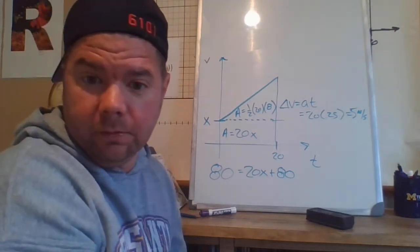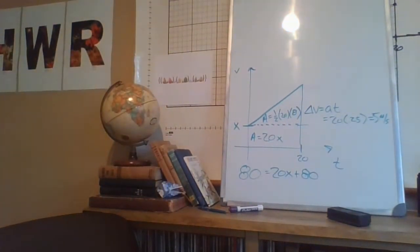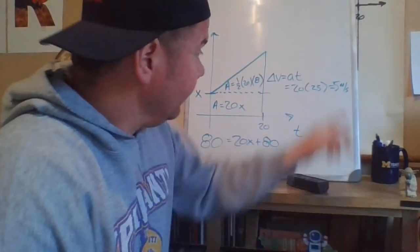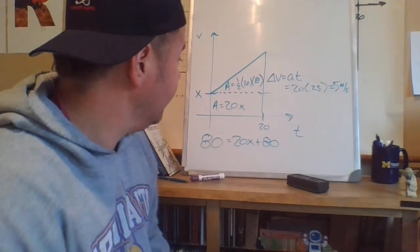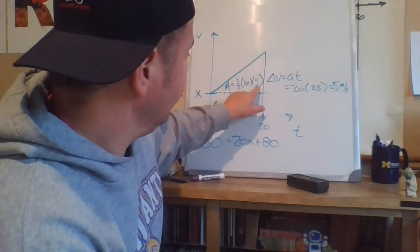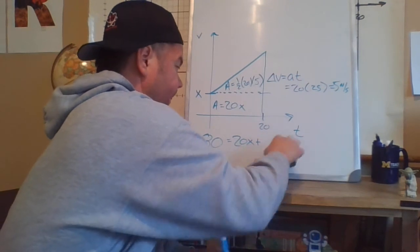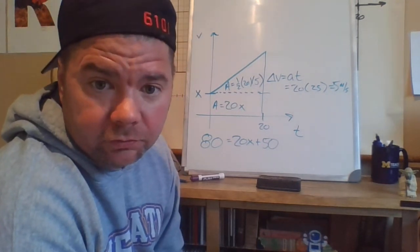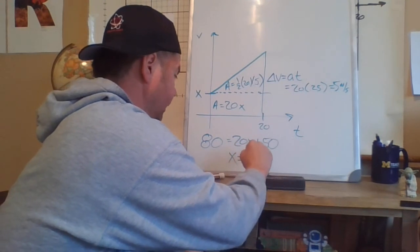Quick break — my dog Cody came in scared of the thunder, so he's joining us as a sidekick. Back to the problem: with the correction, the total distance equation is 20x + 50 = 80. Solving for x: 20x = 30, so x = 1.5 meters per second. That's the initial velocity of the boat.